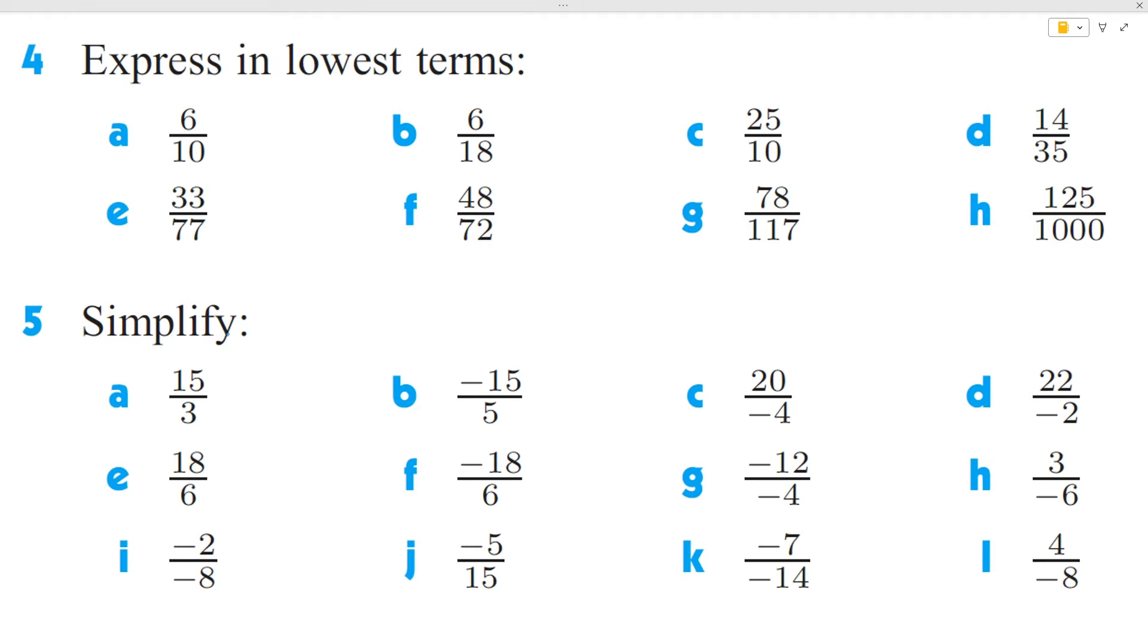So when you simplify fractions, it's important to note what's at the top and what's at the bottom and what common factors we have. When you look at a number like 6 over 10, you should note that 6 is made up of 2 and 3, and 10 is made up of 2 and 5. So we can simplify this by dividing the top and the bottom by 2, and if we do that, we're left with 3 over 5.